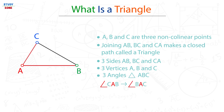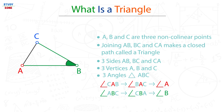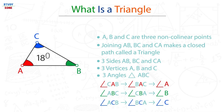Triangle ABC has three angles. Angle CAB, also called angle A; angle ABC or angle CBA, also called angle B; and angle ACB or BCA, also called angle C. An important fact here is that the sum of all three angles of a triangle is 180 degrees — so angle A plus angle B plus angle C equals 180 degrees.